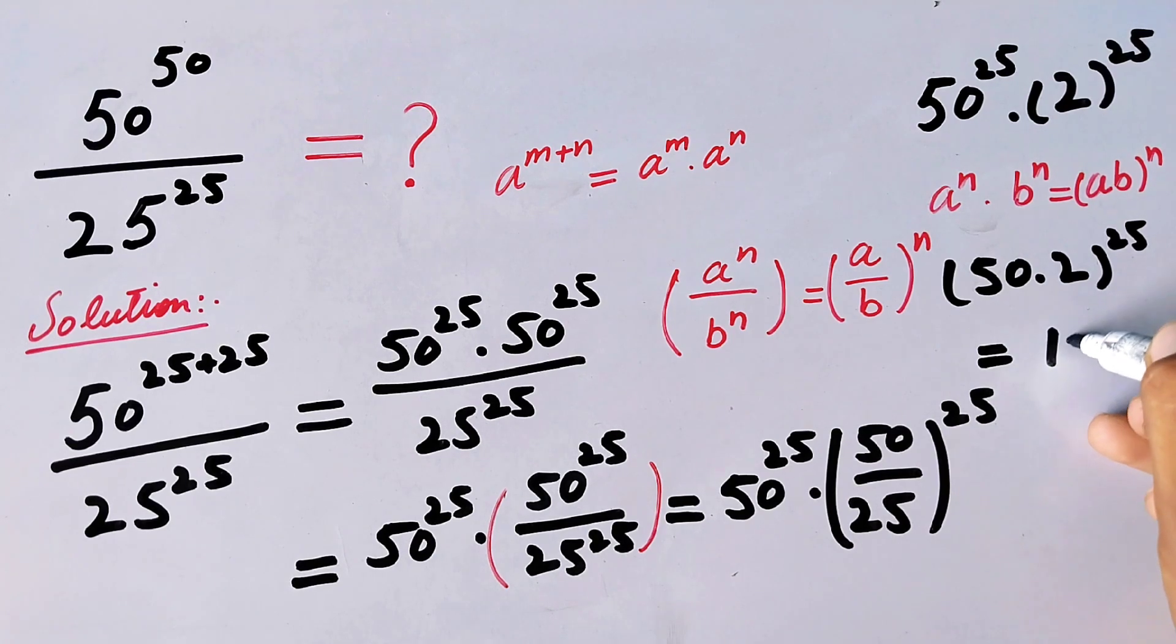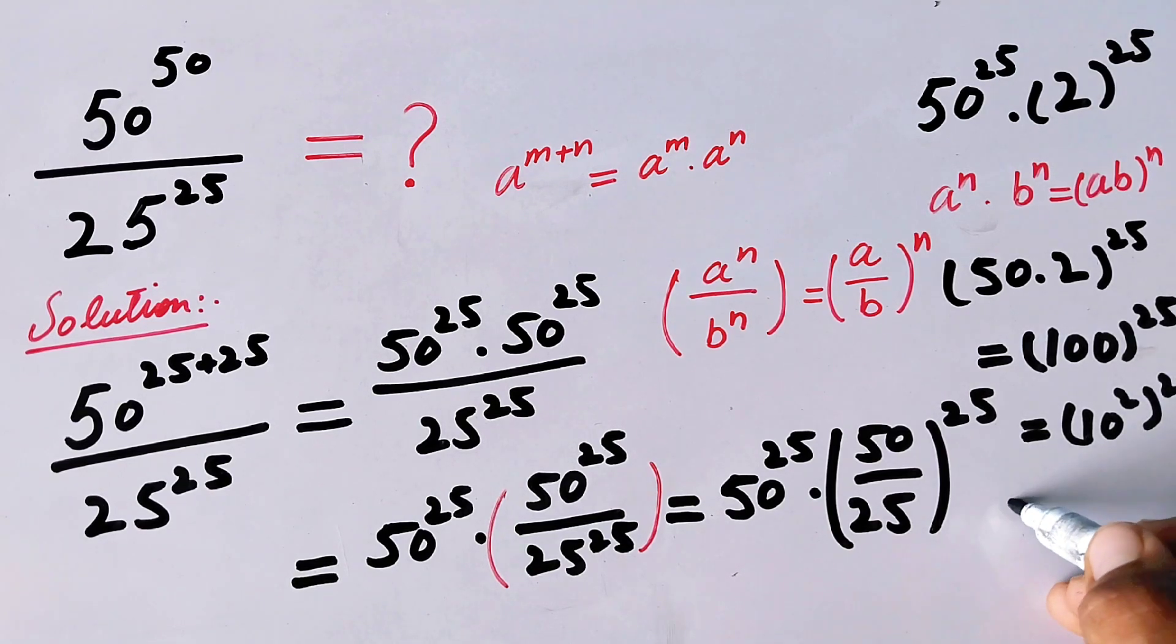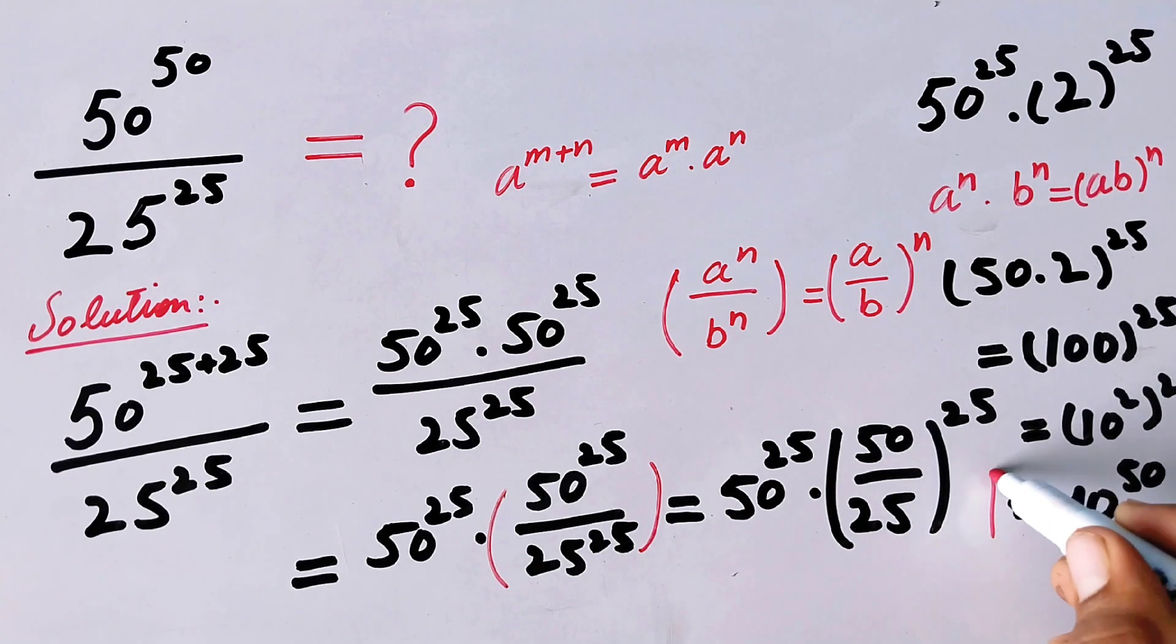We can write 100 as 10^2, so this becomes (10^2)^25. When 25 multiplies by 2, it becomes 10 raised to the power 50, and that is our final answer.